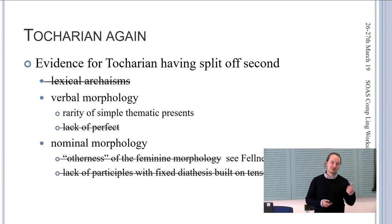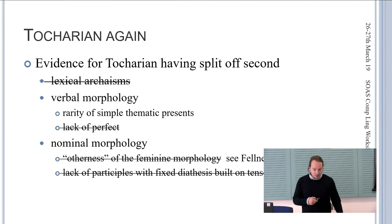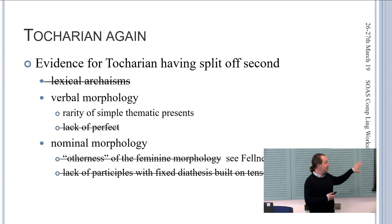Tocharian changed the perfect, but so did other Indo-European languages. Latin made a new preterite category composed of perfect and aorist, and something similar must have happened to Tocharian. So we are left with the rarity of simple thematic presents and accompanying features like the thematic optative. Tocharian does not have many thematic presents and does not have the thematic optative. But we see, overall, not so many strong arguments for Tocharian having split off second.